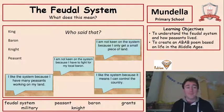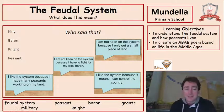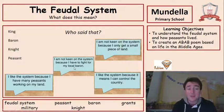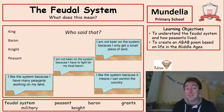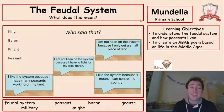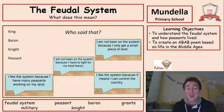Let's see which members of the feudal system said these things. We've got the king, a baron, a knight, and a peasant. Which one said which? 'I'm not keen on the system because I only get a small piece of land.' 'I'm not keen on the system because I have to fight for my local baron.' 'I like the system because I have many peasants working on my land.' 'I like the system because it means I can control the country.' Have you chosen? You don't need to write it down — it's just a game. Let's have a look at who said what.